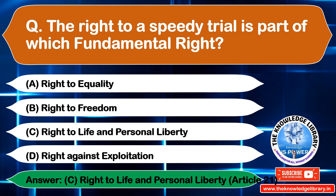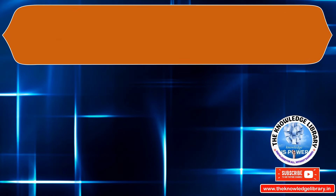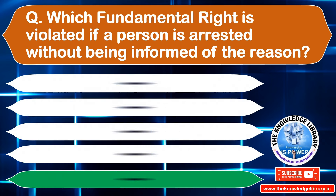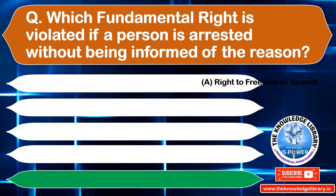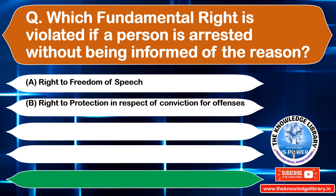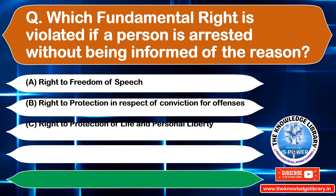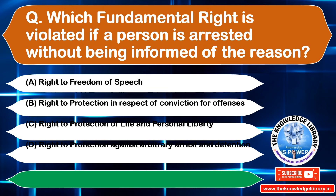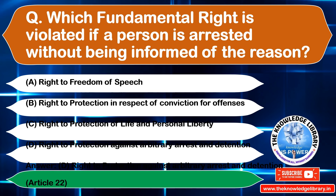The next question is: which fundamental right is violated if a person is arrested without being informed of the reason? Option A: Right to Freedom of Speech, Option B: Right to Protection in Respect of Conviction for Offences, Option C: Right to Protection of Life and Personal Liberty, Option D: Right to Protection Against Arbitrary Arrest and Detention. The correct answer is Option D.